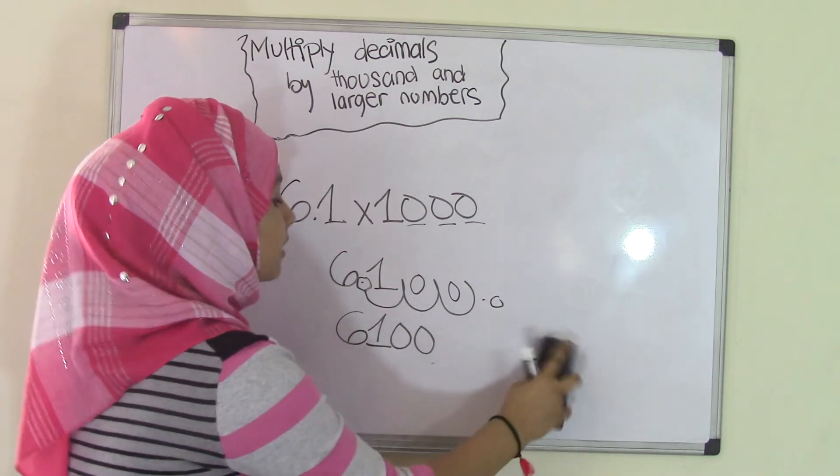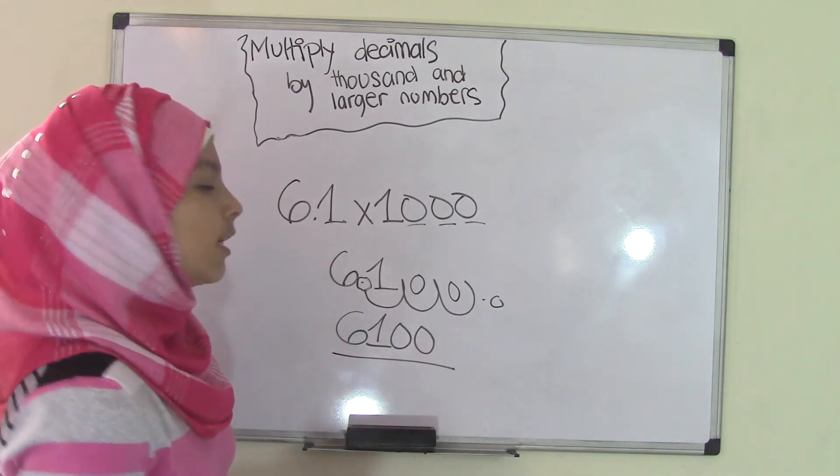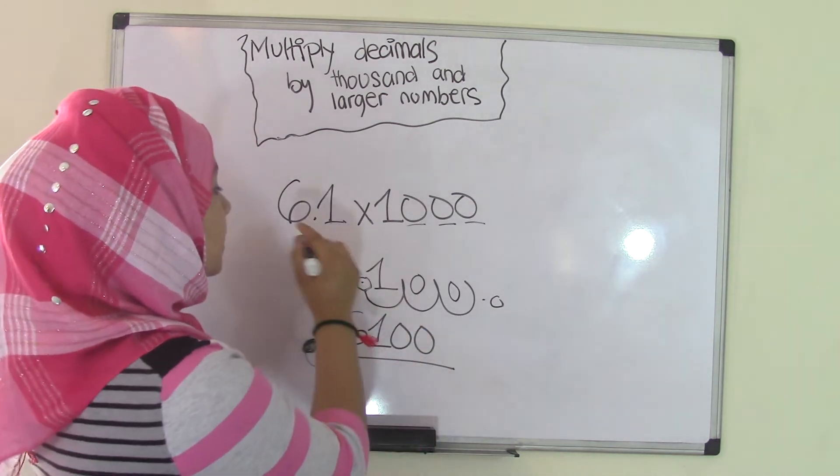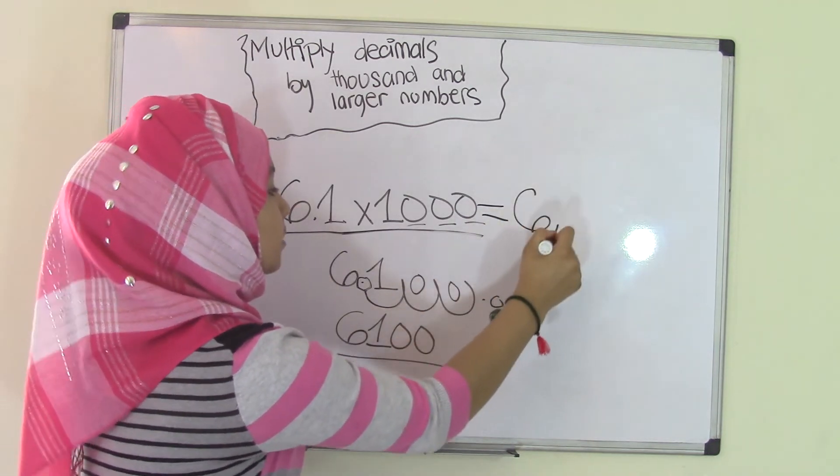So, all you can do is cancel this out, and we are left at 6,100, which means the product of 6.1 times 1,000 equals 6,100.